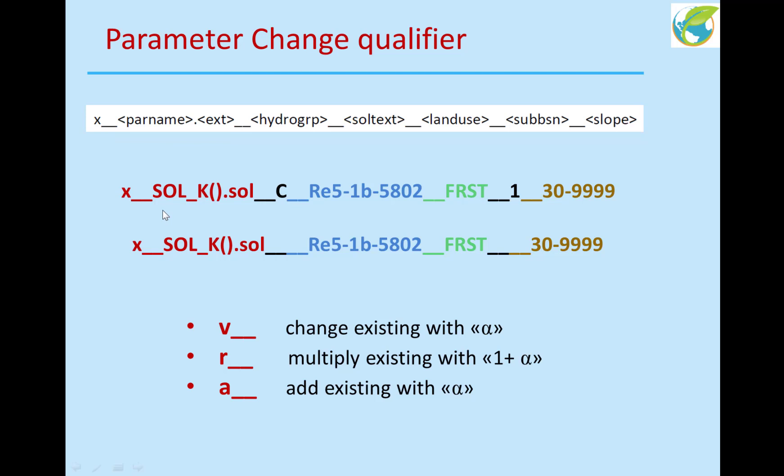For example, soil hydraulic conductivity. These brackets are because there are different layers of soil hydraulic conductivity. So each parameter which has different layers, you need to use a bracket to specify which layer. And if you don't put a number, that means all layers.